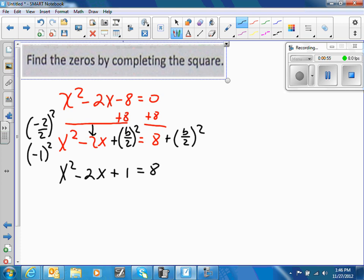And you're going to add that plus 1 over here. Now remember this part is x minus b over 2 squared. Okay, so whatever b over 2 was, so this is going to be x minus 1 squared equals 9.